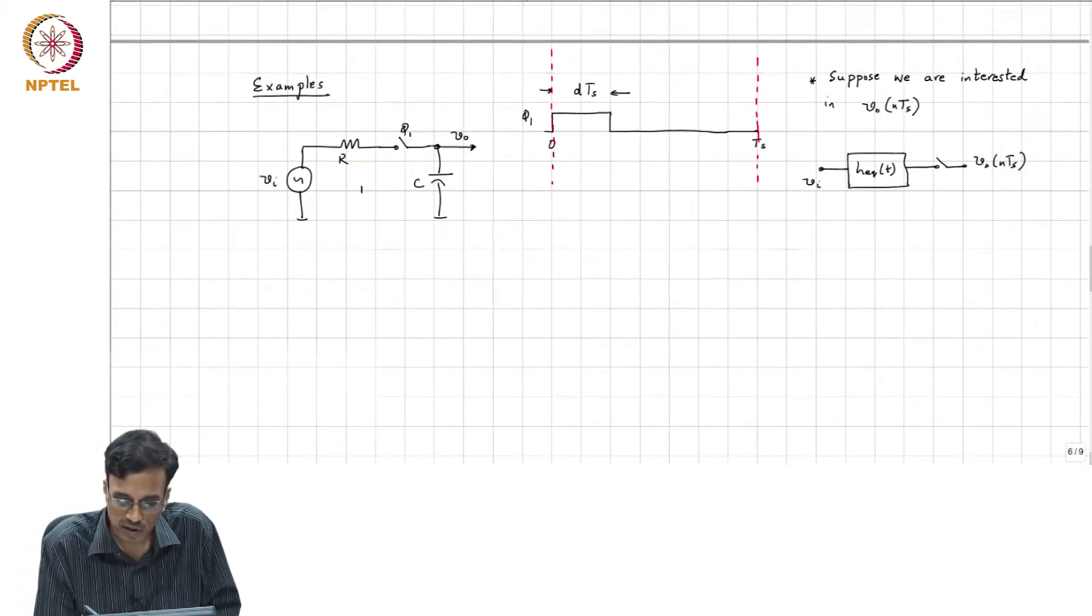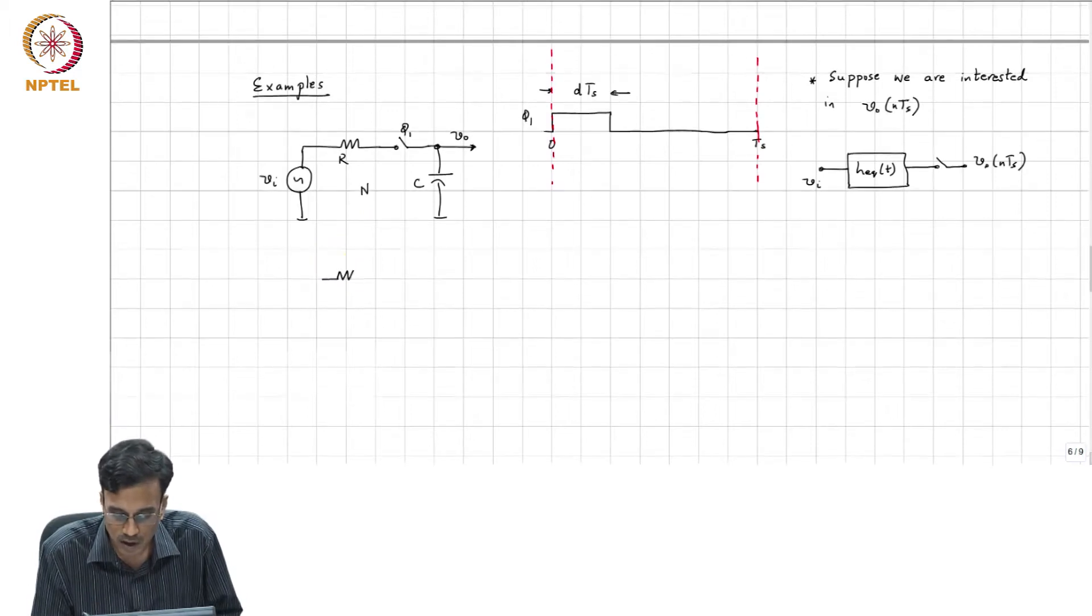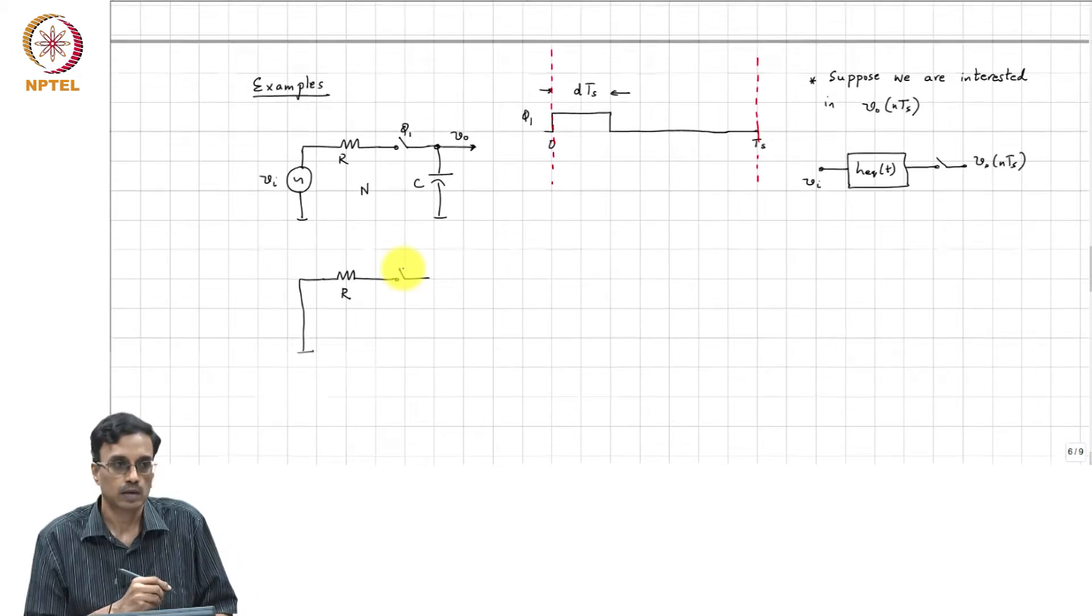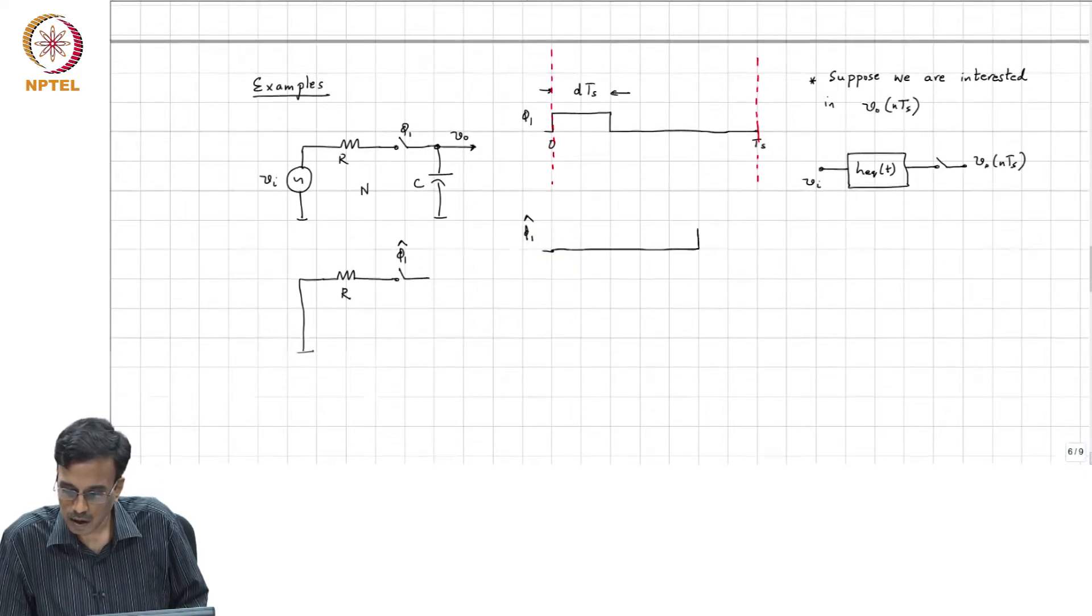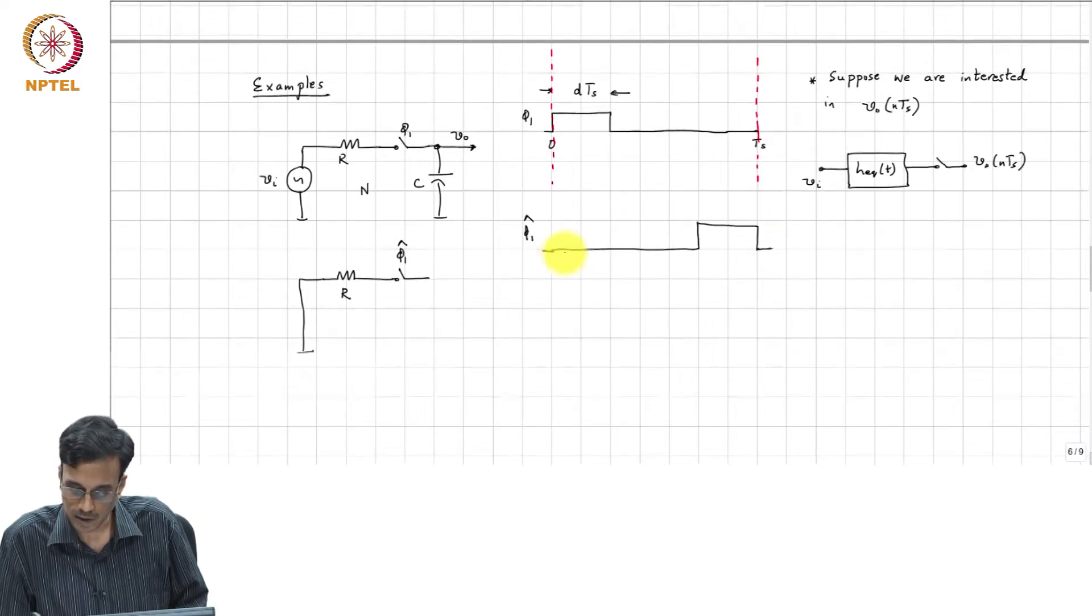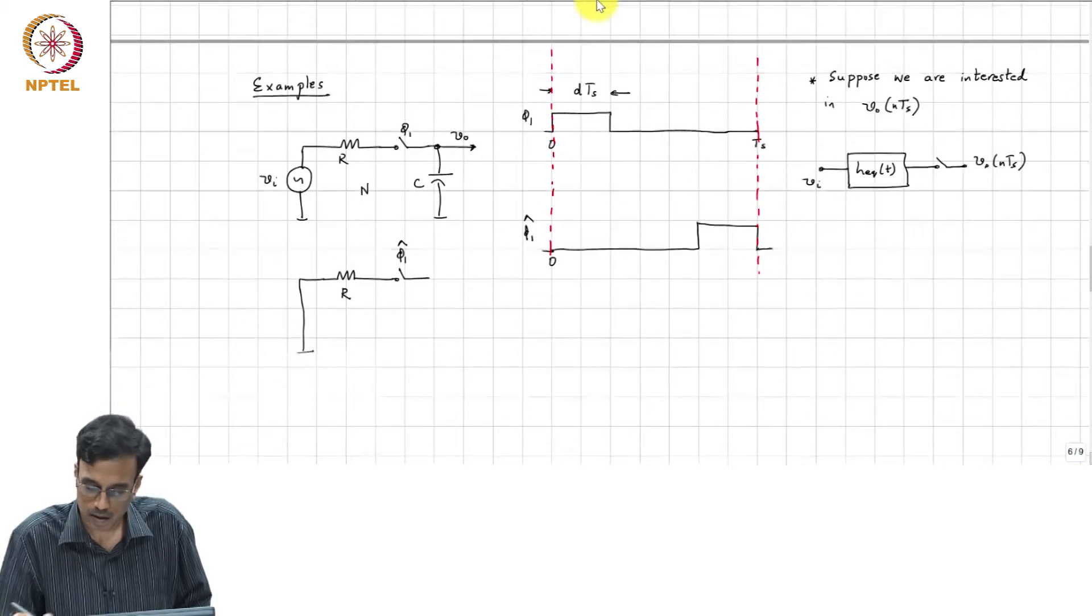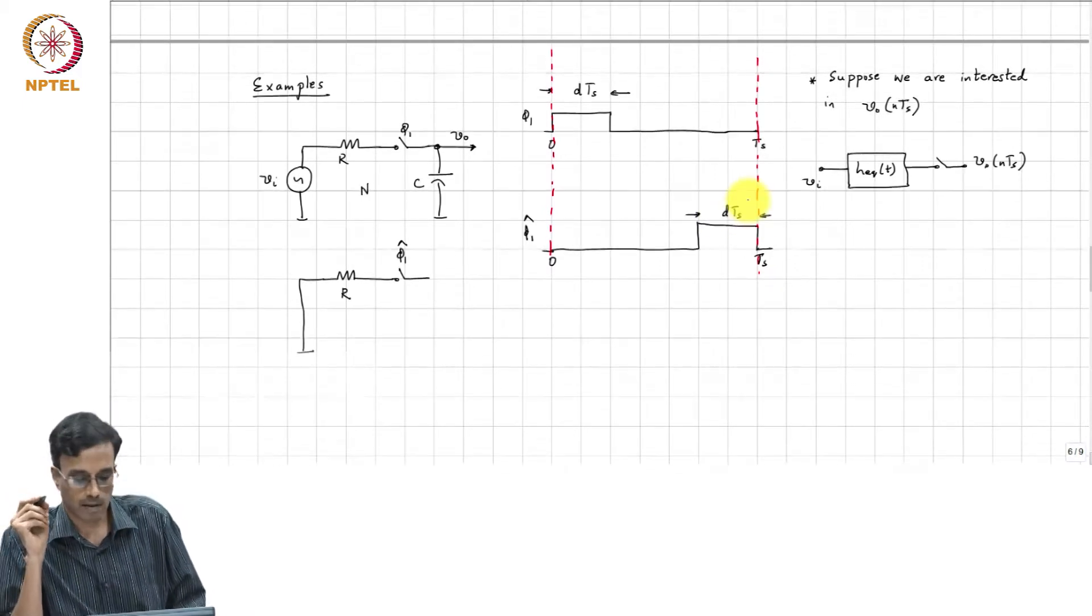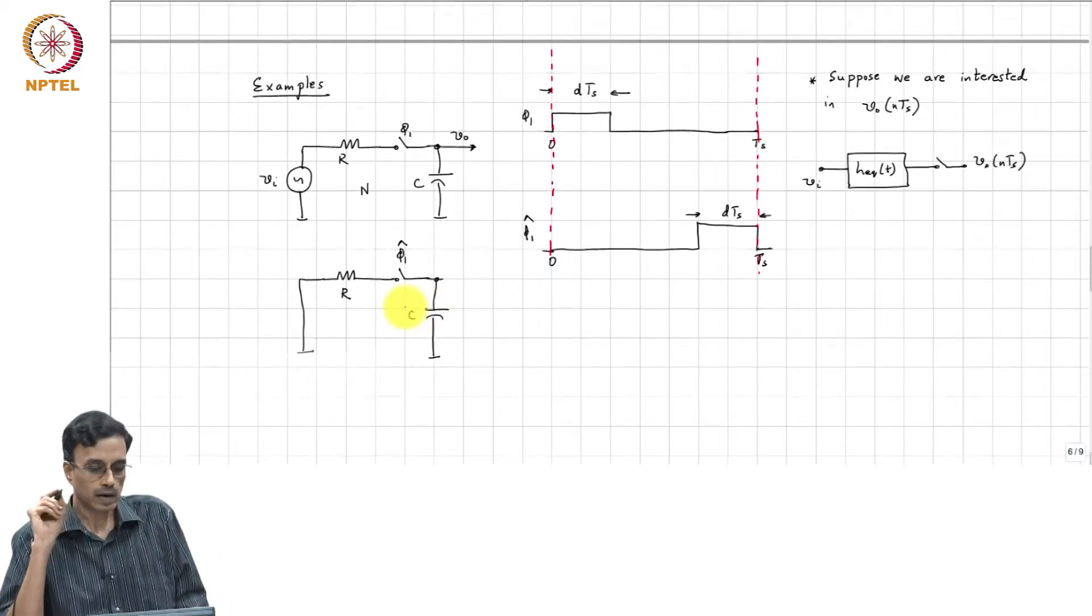Well, you form the adjoint network. So, this is N. This is a voltage input, voltage output. So, what should we do? We first draw the adjoint network. The voltage source remains Vi. And what happens to phi 1 of minus T? So, this becomes phi 1 of minus T. And therefore, phi 1 hat simply becomes something like this. So, this is the adjoint network.